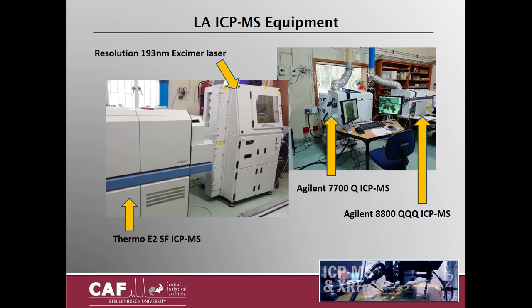The equipment in our laser ICP-MS lab includes two Resolution 193 nm Excimer lasers, which are interfaced either with the Thermo Element 2 sector field ICP-MS or an Agilent quadrupole or triple quad ICP-MS. The Element is used exclusively for uranium-lead isotope ratio measurements because of its superior sensitivity, while the single quad is used for trace elements and the triple quad for both traces and selected isotope analysis.